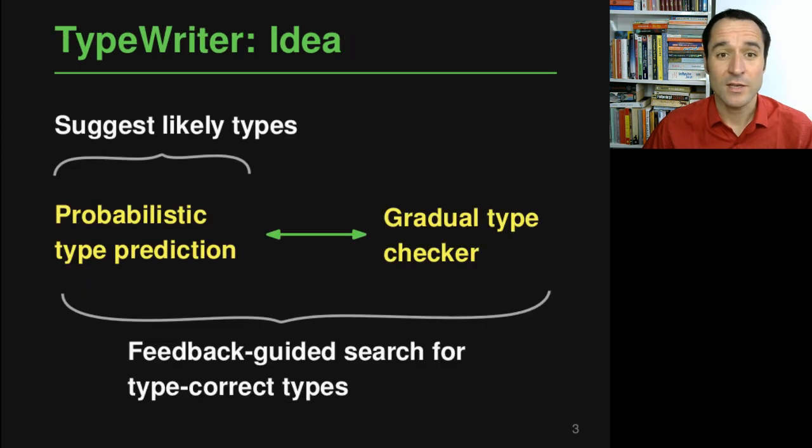Now the approach that we are presenting here is called Typewriter, and the key idea is that we combine two ways of getting these type annotations. One is that we have a probabilistic type prediction model.